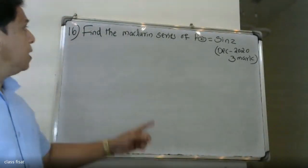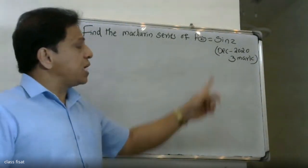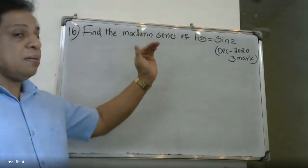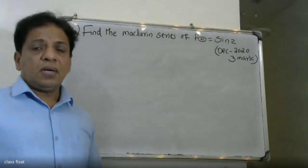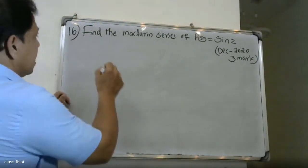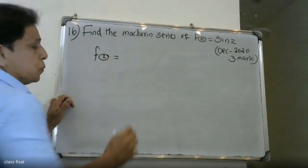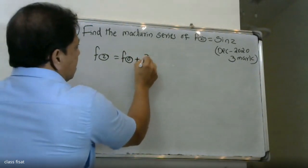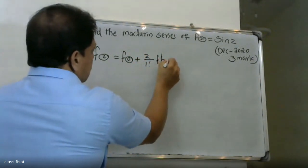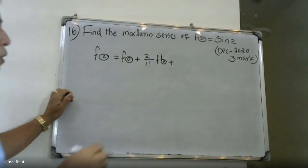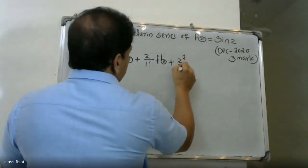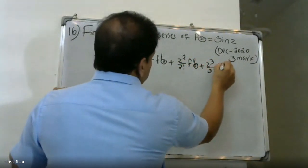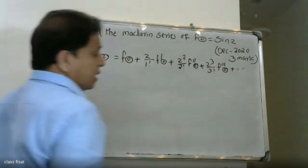Good morning students. The question: find the Maclaurin series of f of z equal to sine z. The Maclaurin series formula is: f of z equals f of 0 plus z by 1 factorial times f dash 0, plus z squared by 2 factorial times f double dash 0, plus z cubed by 3 factorial times f triple dash 0, plus etcetera.